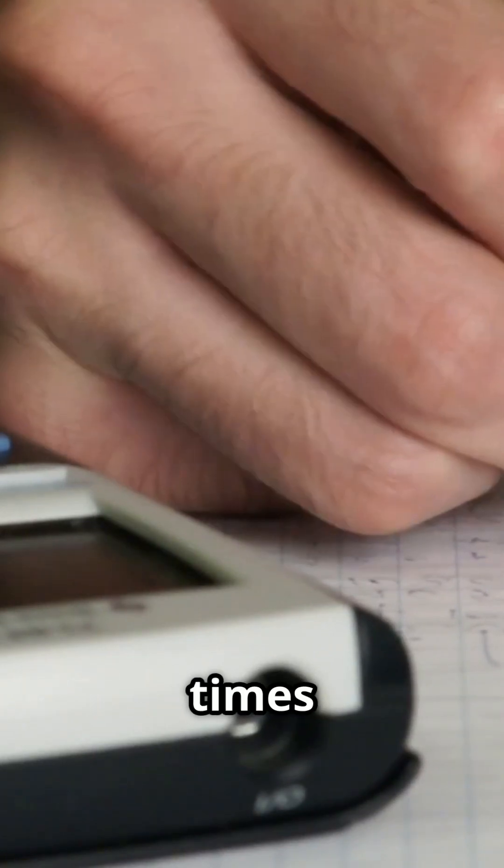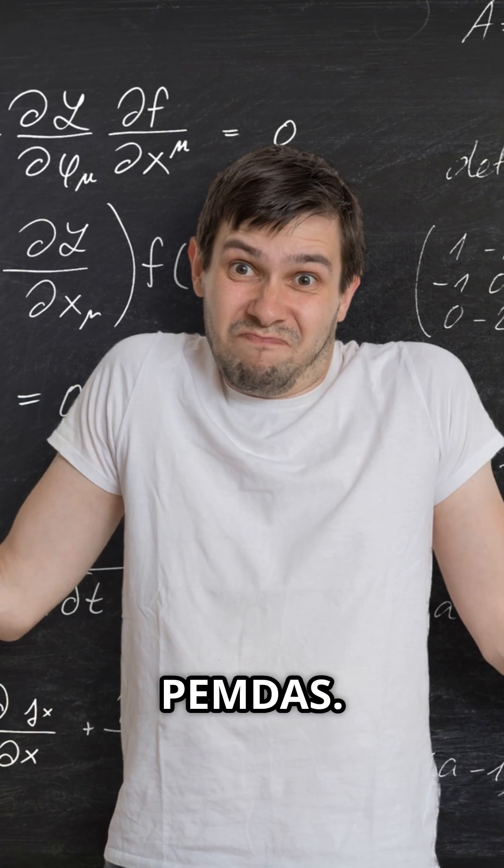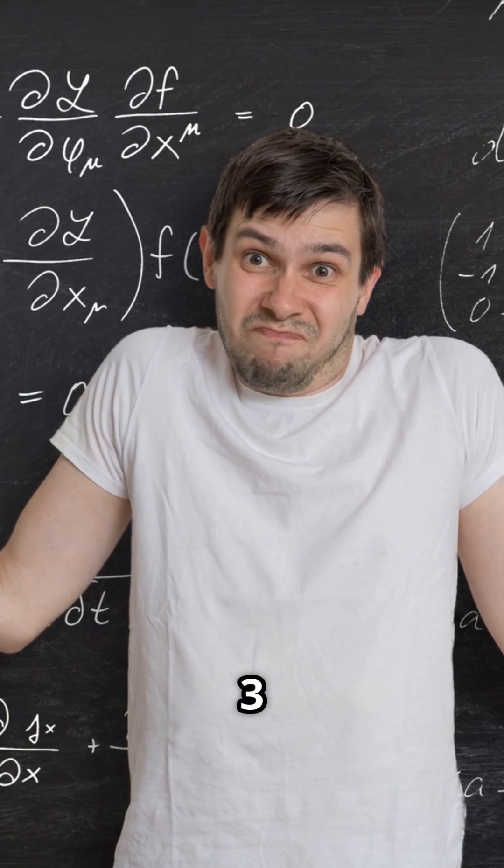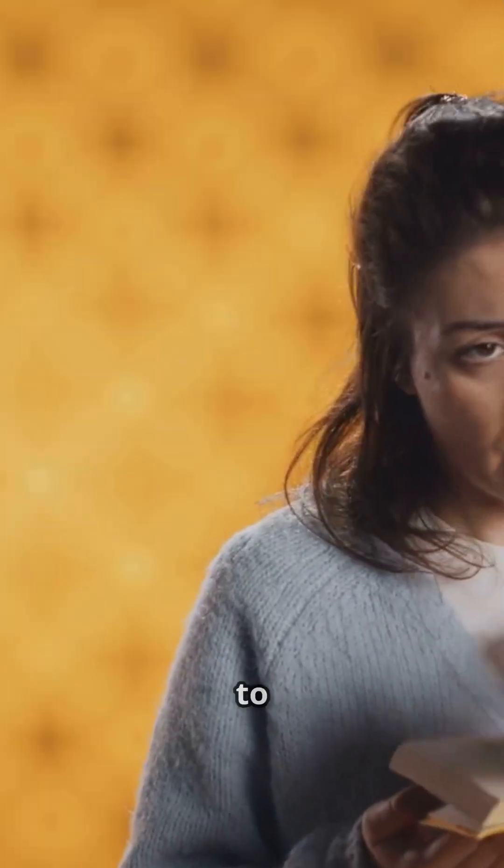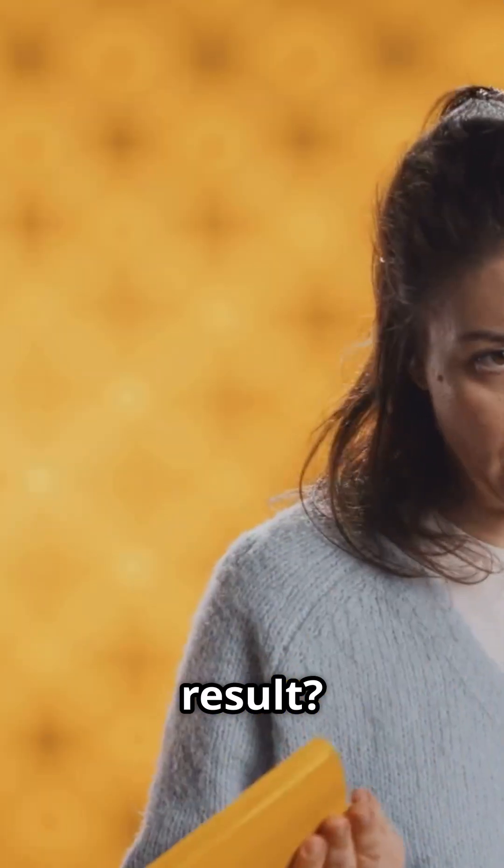Let's break it down with an example. Imagine you've got 8 + 2 × 3. It might be tempting to just go left to right, but that's not how it works. Instead, you follow PEMDAS. Start with the multiplication: 2 × 3 = 6. Then you add 8 to that 6. The result? 14.